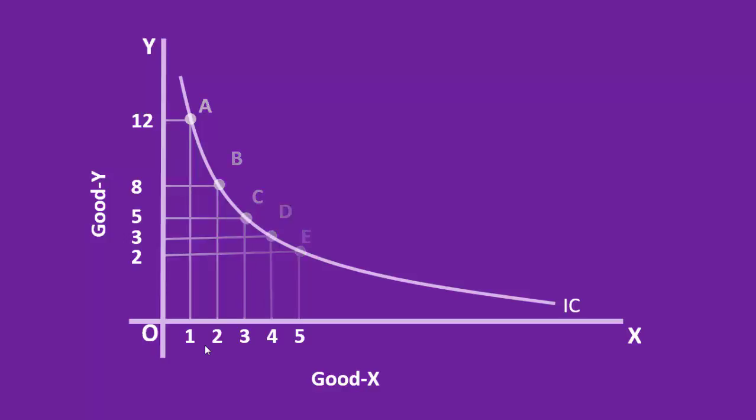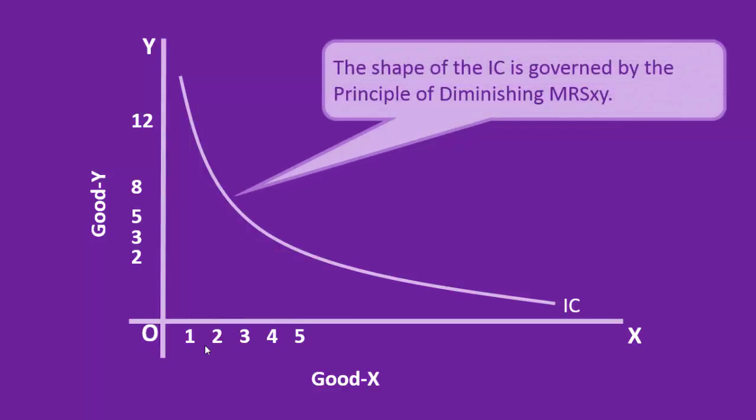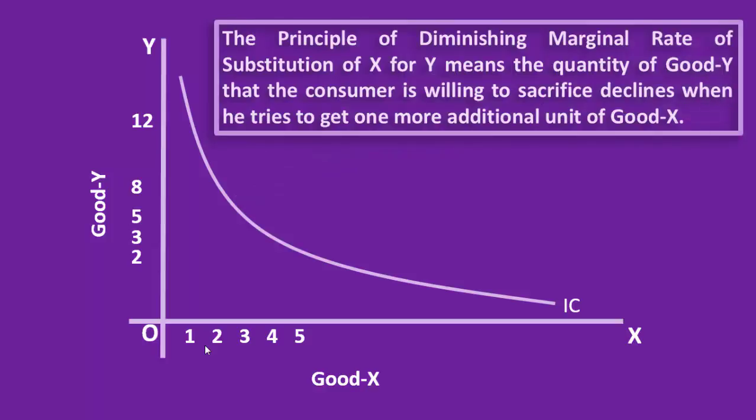because the shape of the indifference curve is governed by this. What do we mean by that? The principle of diminishing marginal rate of substitution of x for y means the quantity of good y that the consumer is willing to sacrifice declines when he tries to get one more additional unit of good x. We can easily understand this principle with the help of our graph.